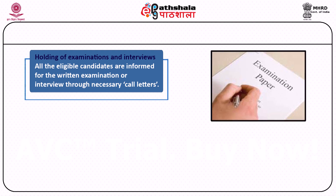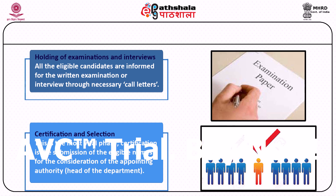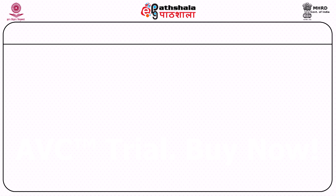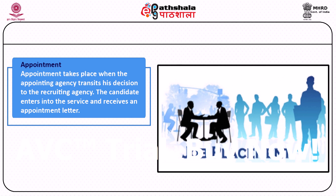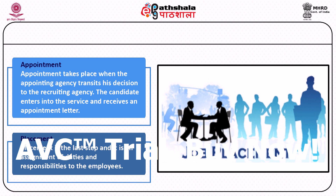After candidates apply, scrutiny of applications is done by recruiting agencies. Next is holding of examinations and interviews by central recruiting agencies, and after selection, the names are certified — that is, sent to the main personnel agency. After certification comes appointment, where an appointment letter is issued to the candidate, and finally placement of the candidate on his position so he is ready to perform his duties and responsibilities.